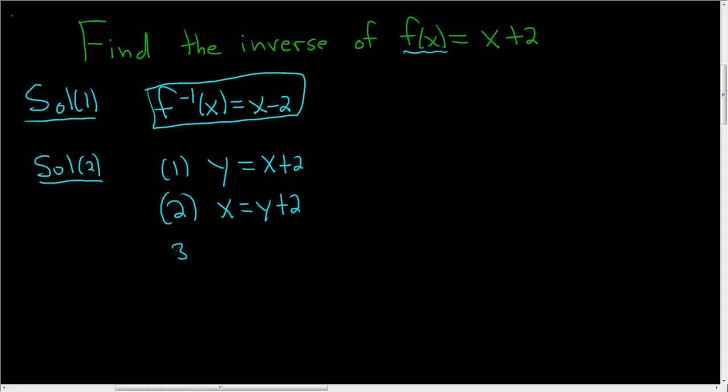Then in the third step you solve for y. So in this case we just subtract 2 from both sides. So we're left with y equals x minus 2.